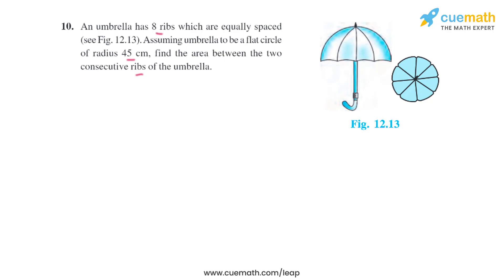As there are eight ribs that are equally spaced, let's find the angle. It will be 360 degrees divided by 8. On dividing 360 degrees by 8, we'll get 45 degrees.